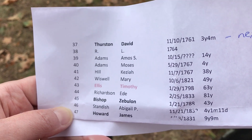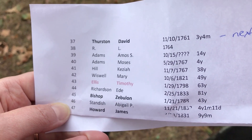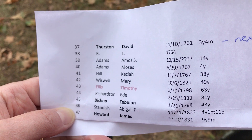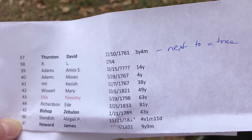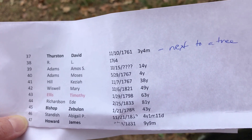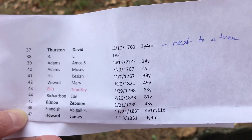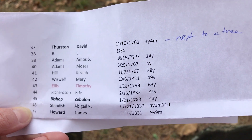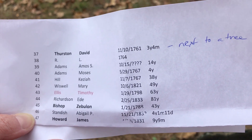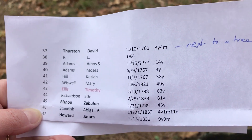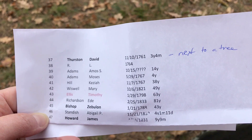If I can find Timothy Ellis, maybe I can find some of these and complete my database a little bit more. So I'm on the hunt to find either David Thurston, Zebulon Bishop, or James Howard. I noted from my photograph that David Thurston's gravestone is right next to a tree, which is going to help me find it — the other photographs were just of the stones themselves without any landmarks.